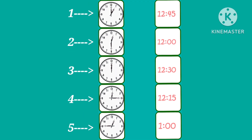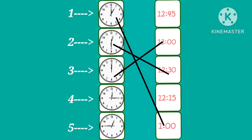Identify the correct time. Number one: what's the time on the clock? It's one o'clock. Number two is 12:30. Number three is 12 o'clock. Number four is 12:15. Number five is 12:45.